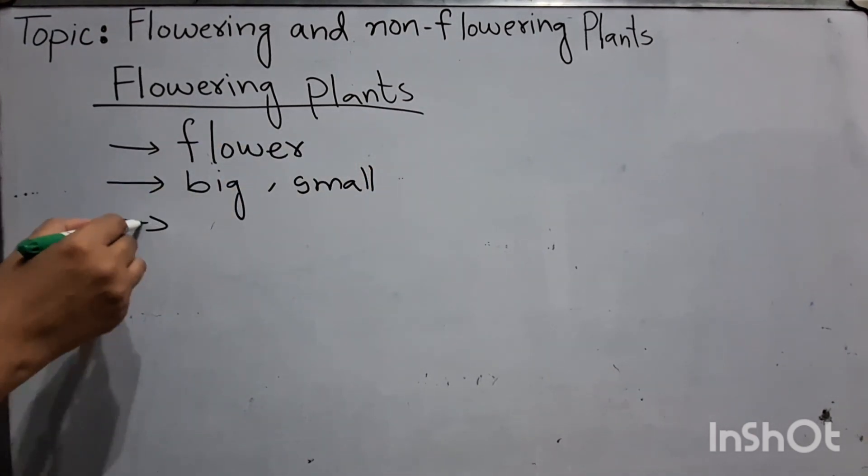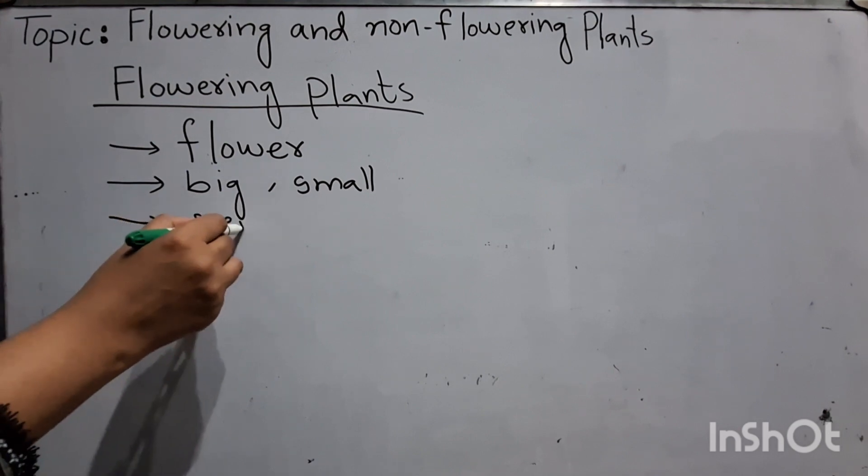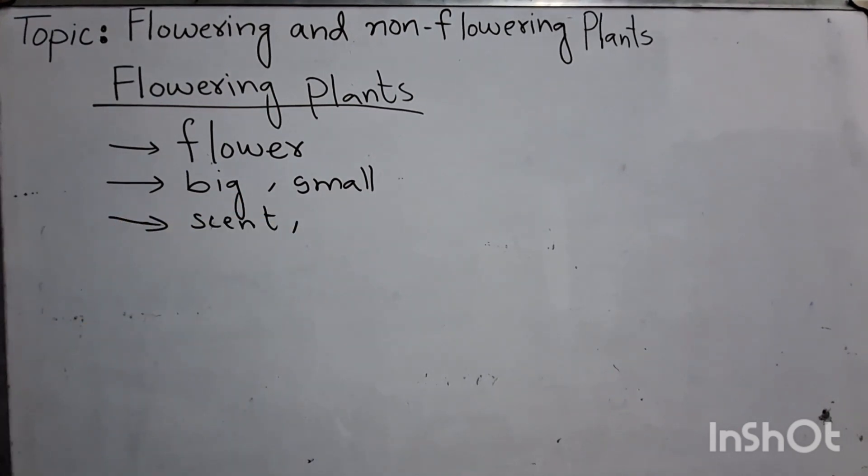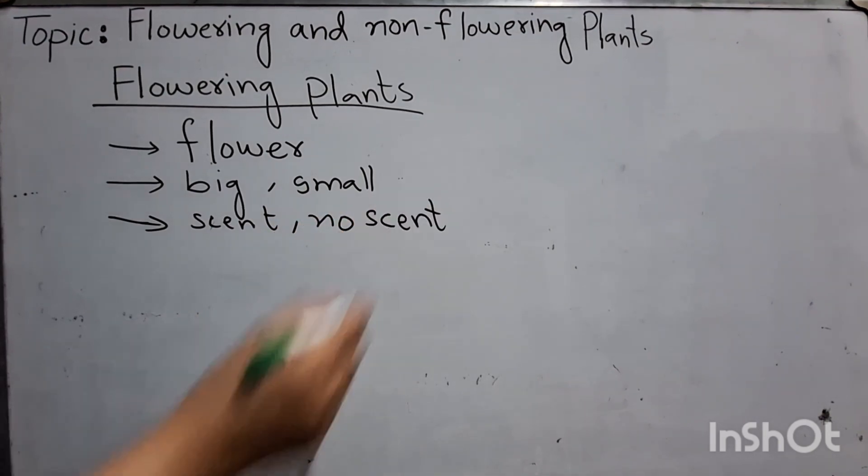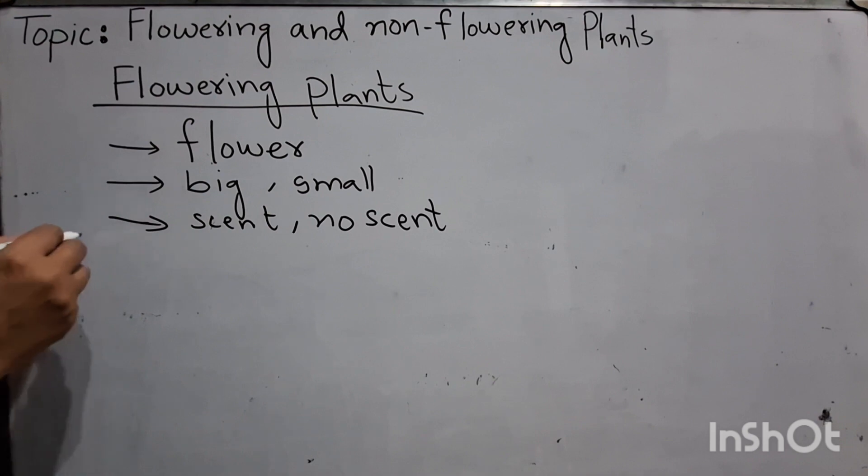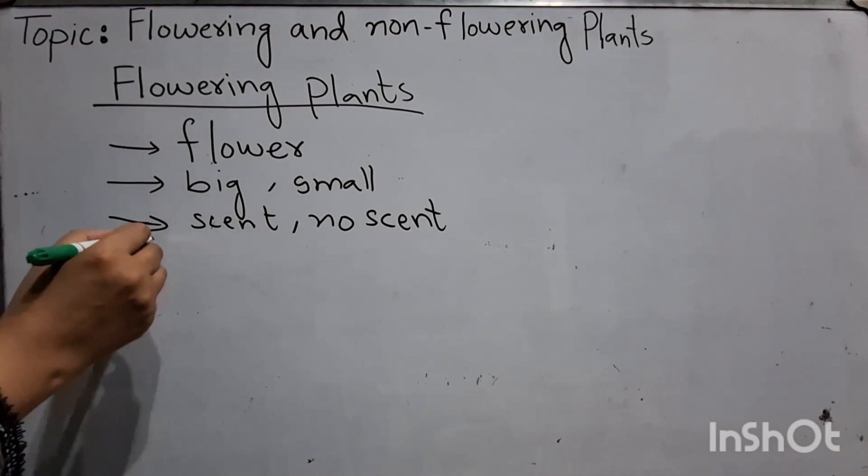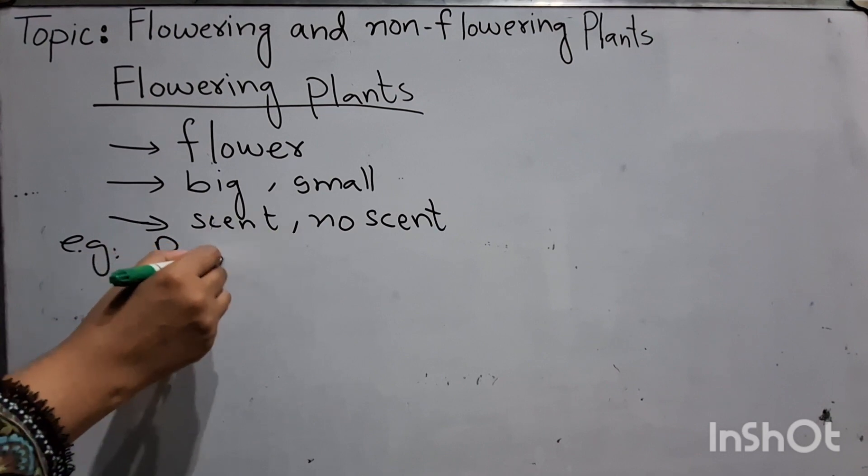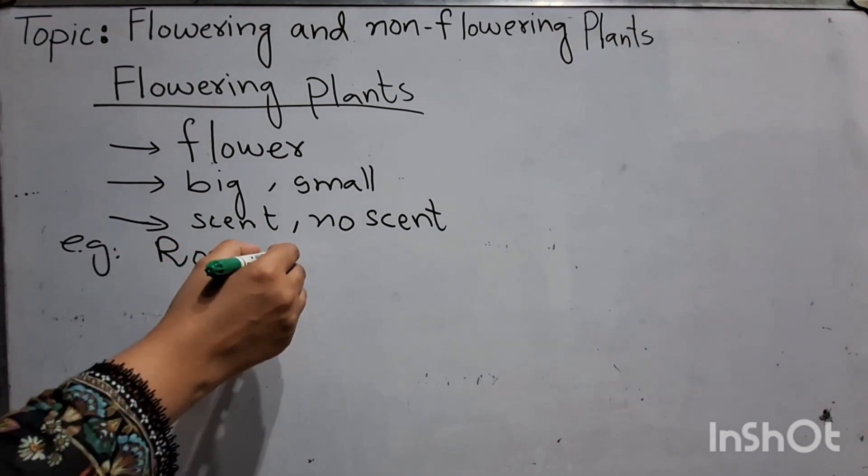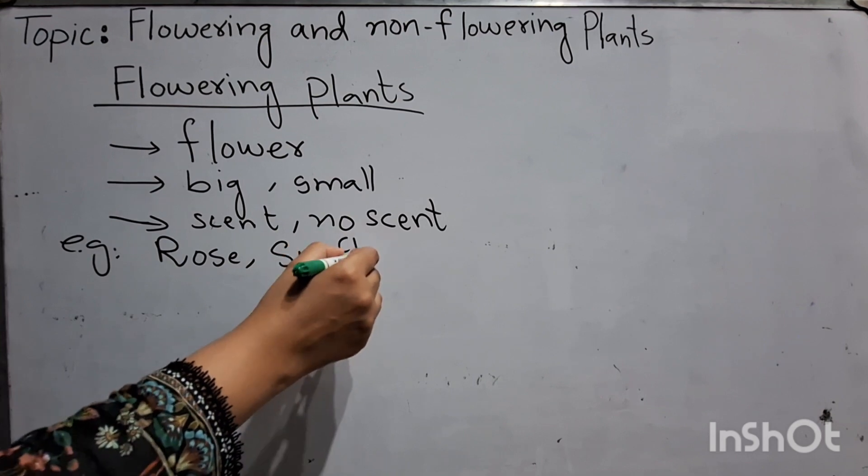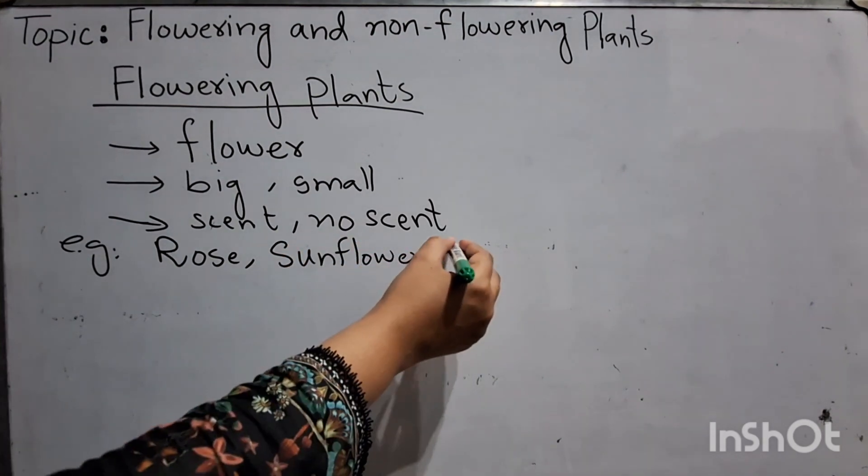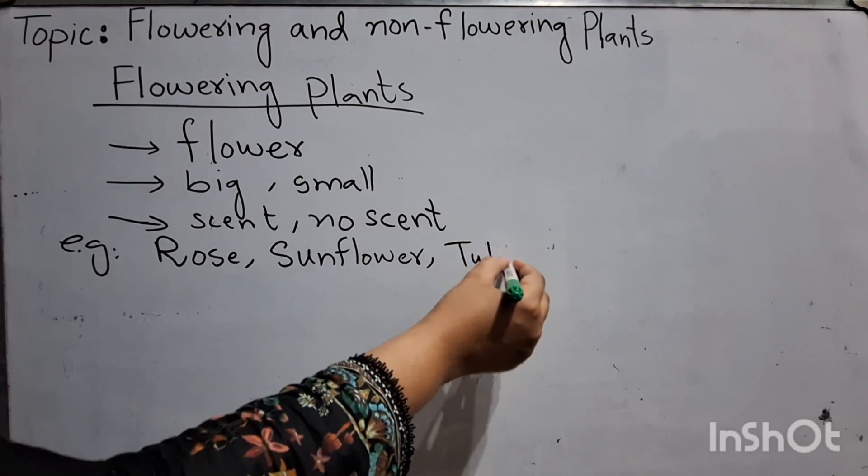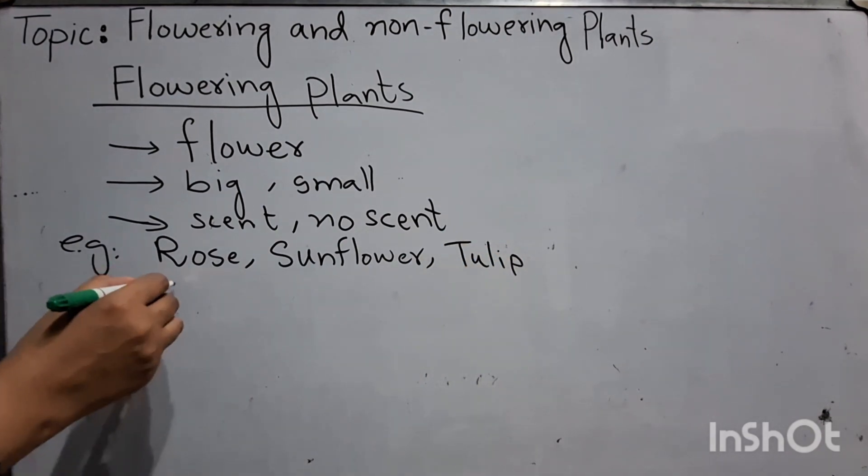Some flowers have scent and some flowers have no scent. For example, rose, sunflower, tulip, jasmine.